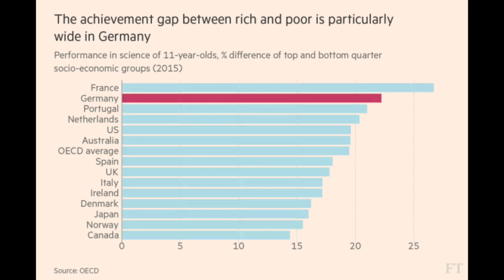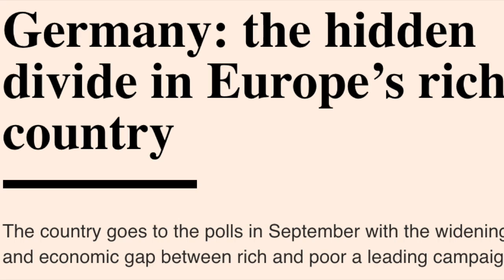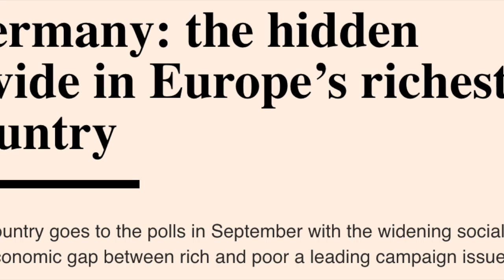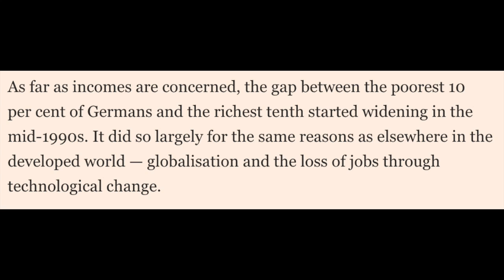On household income, Germany is close to the European average, but on wealth, Germany is significantly less equal than its European peers. The bottom 40% of Germans have almost no assets at all, not even bank savings. Furthermore, income inequality is on the rise. The Financial Times reports that, as far as incomes are concerned, the gap between the poorest 10% of Germans and the richest tenth started widening in the mid-1990s. It did so largely for the same reasons as elsewhere in the developed world: globalization and the loss of jobs through technological change.